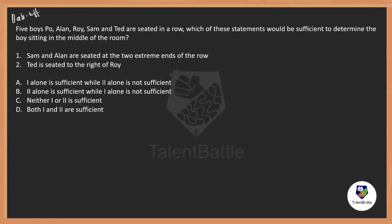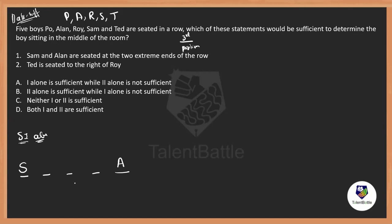One more data sufficiency question: five boys — Po, Alan, Roy, Sam, and Tit — are seated in a room. Take their initials as P, A, R, S, T. Which of these statements would be sufficient to determine the boy sitting in the middle — third — position? Statement one says S and A are sitting at the extreme ends. But that doesn't tell us anything about the other three persons, so the third position is still unknown. Statement one alone is insufficient.